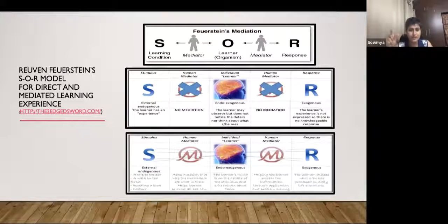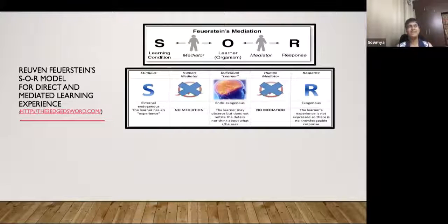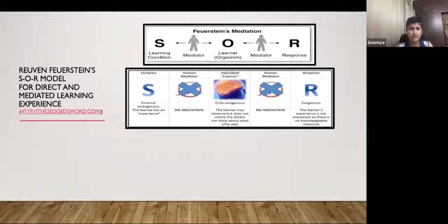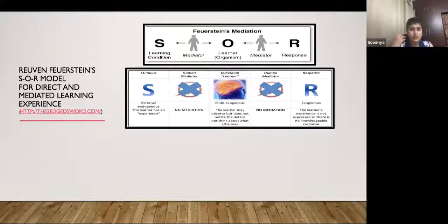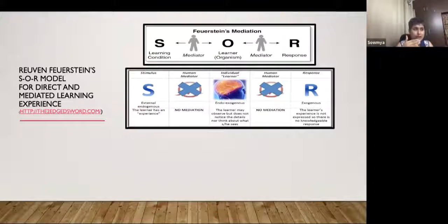With mediation, the learner's mind focuses on the details of the stimulus and begins to think about it. I would even tell families to say something silly during an interaction — if you already know what the child wants and the child is asking or gazing at something, say something irrelevant. Then the child begins to think: 'Why is she not getting it? I'm looking at it — maybe I need to do something more, maybe I need to say something more.'